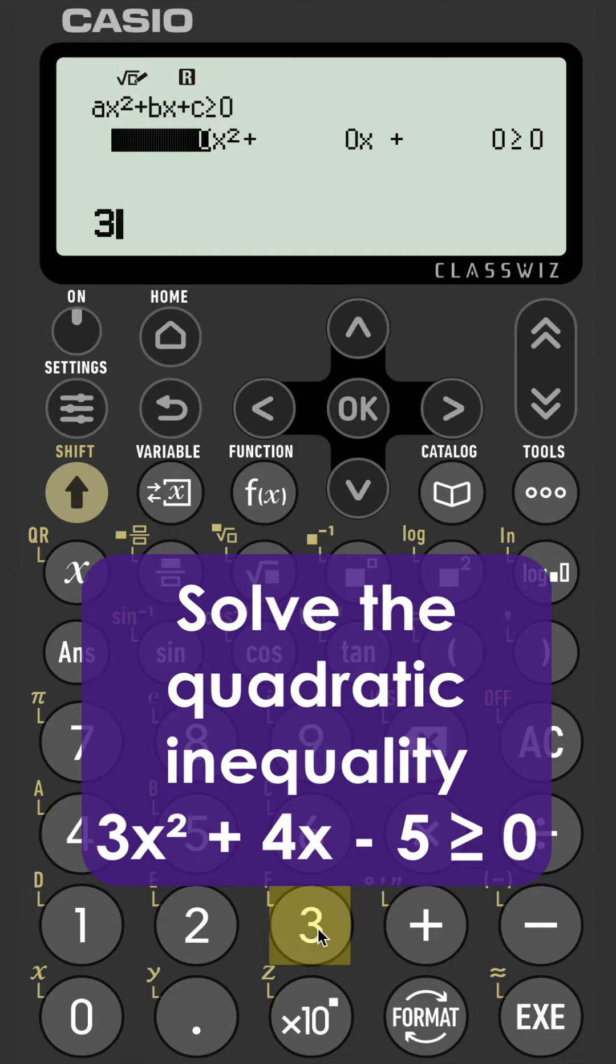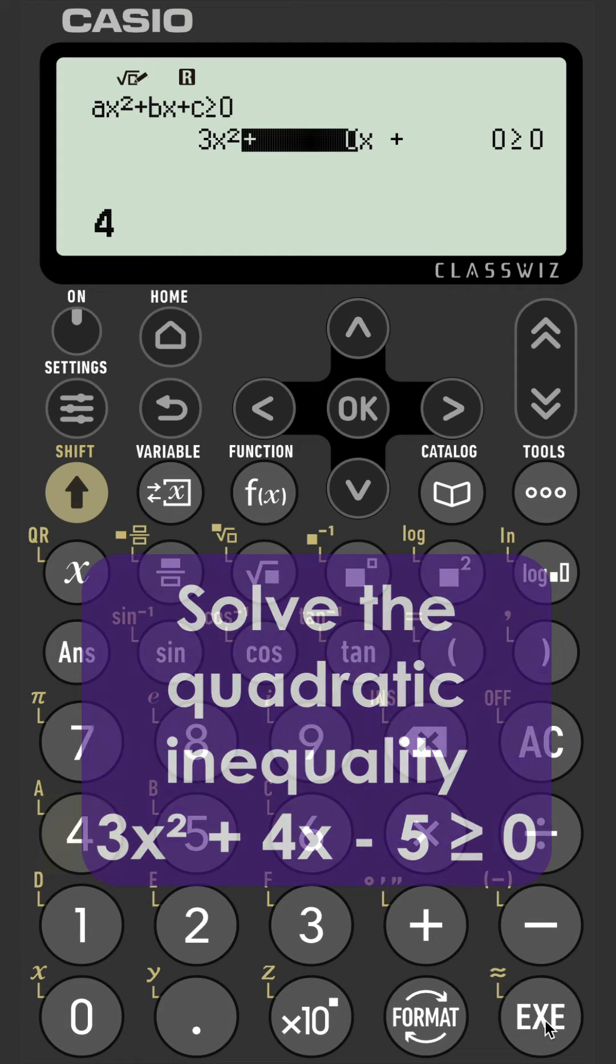Now we just need to input the coefficients, 3x squared plus 4x minus 5.